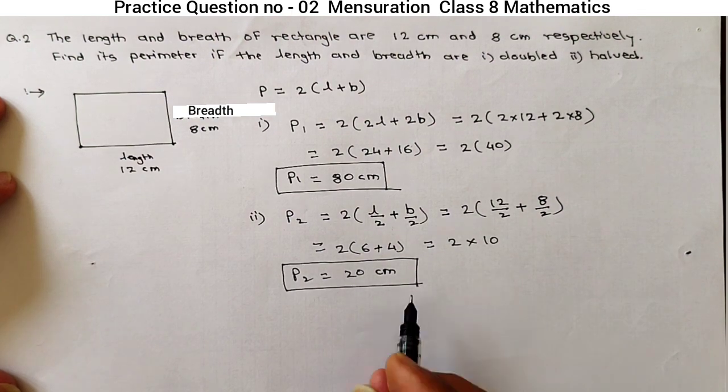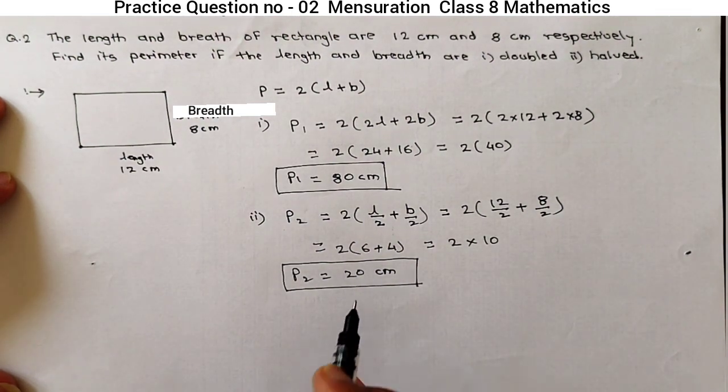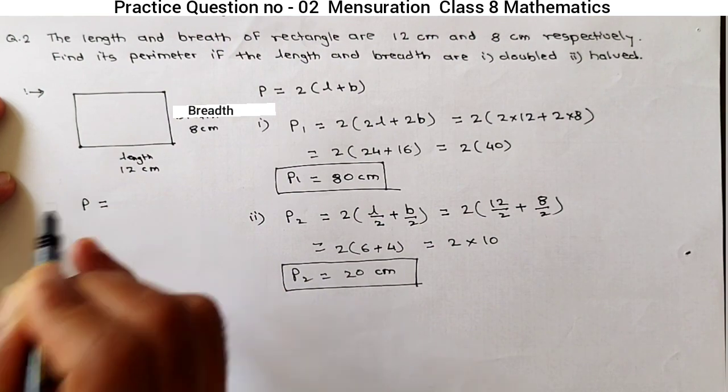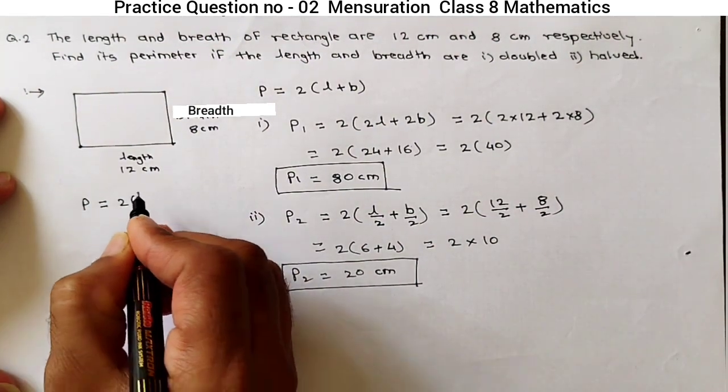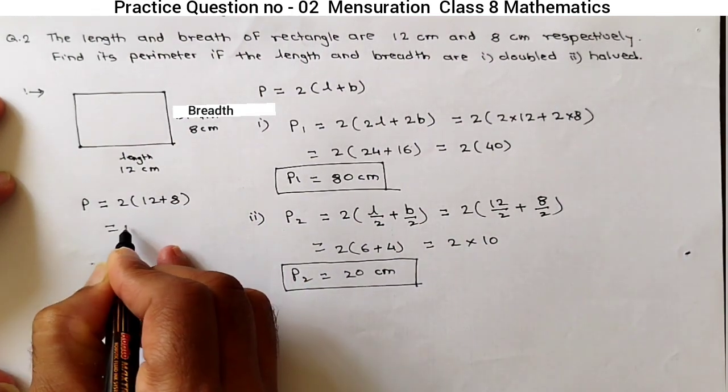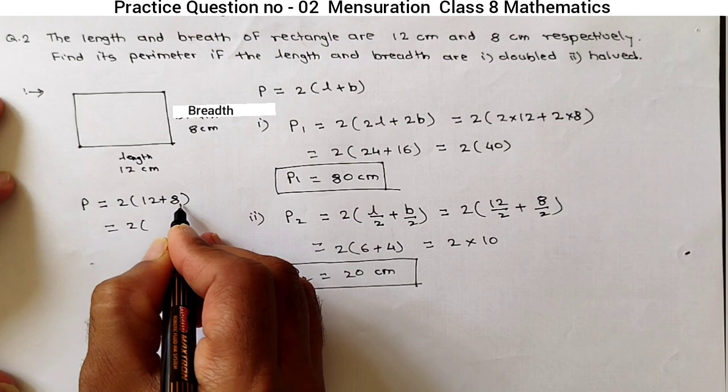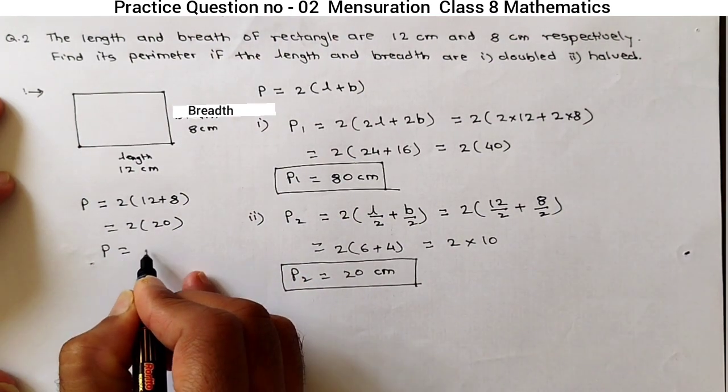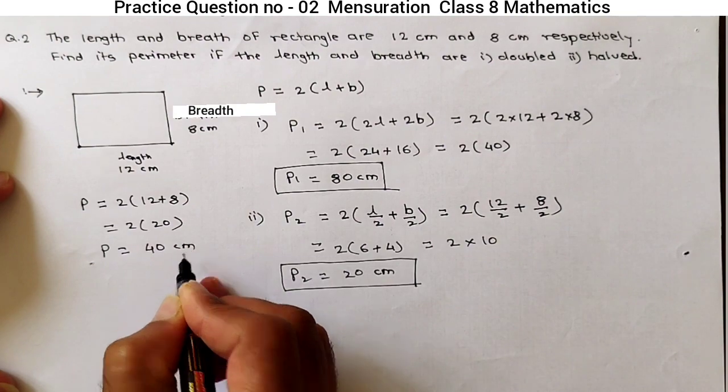So, this is our answer. Just notice that in original condition, perimeter will be 2 into bracket L is 12 and breadth is 8. So, 12 plus 8 is 20 and perimeter, original perimeter is 40 cm.